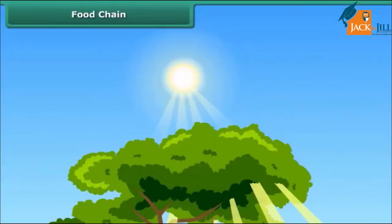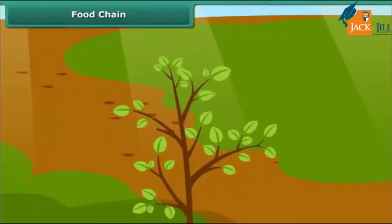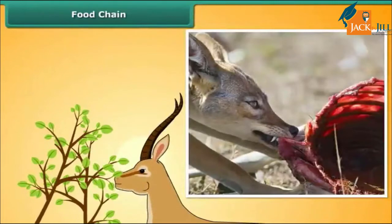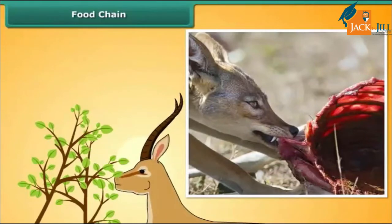The sun is the principal source of energy. The plants are the producers as they manufacture their own food with the help of sunlight. The animals are the consumers. Animals can be plant-eating herbivores or flesh-eating carnivores. Animals can also be omnivores, consuming both plants and other animals. Let us take a simple example of a food chain: plants use sunlight and prepare food, plants are eaten by deer, and deer are eaten by lions.